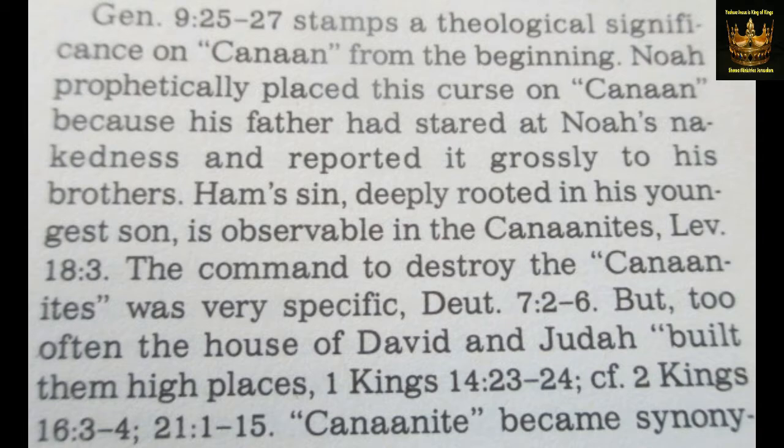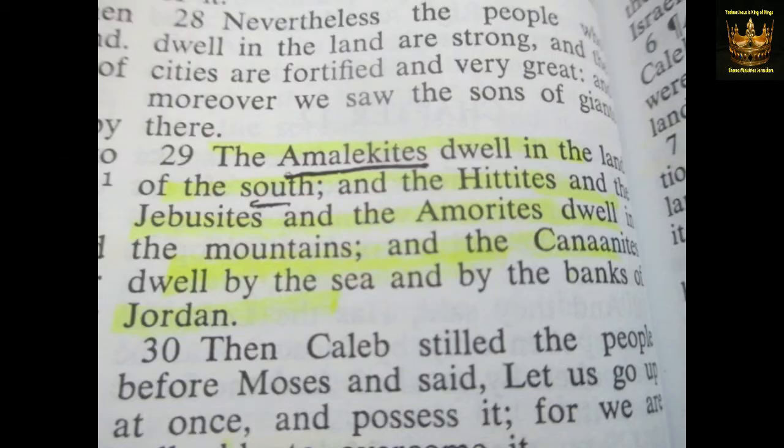Looking down at the bottom here, it says Canaanite became synonymous with religious and moral perversions of every kind. This is a description where it mentions specifically that Canaanites dwell by the sea and by the banks of Jordan.